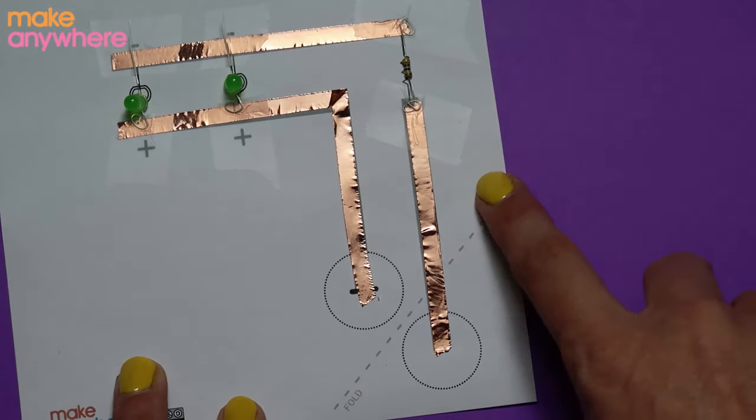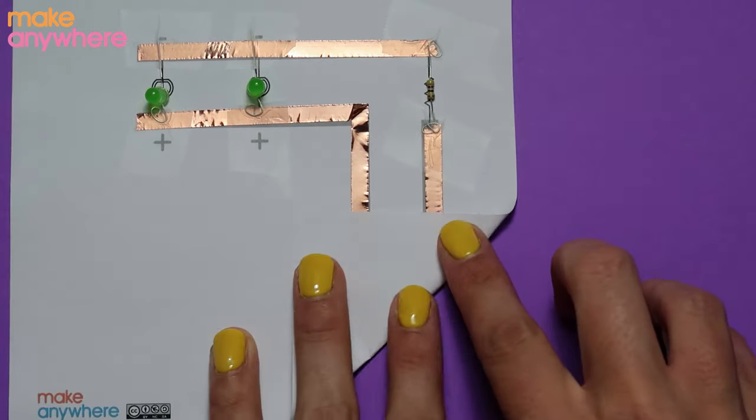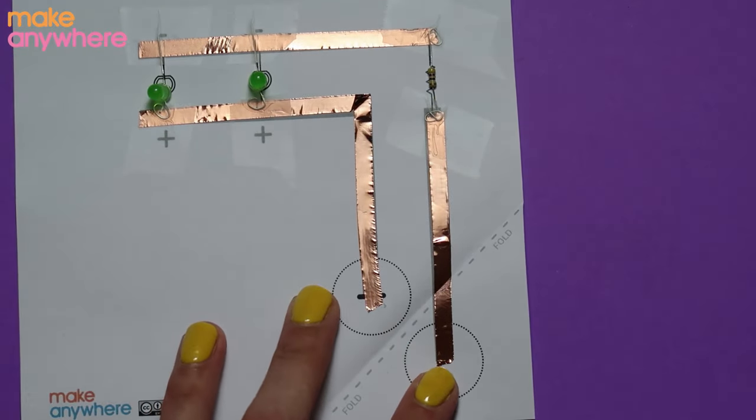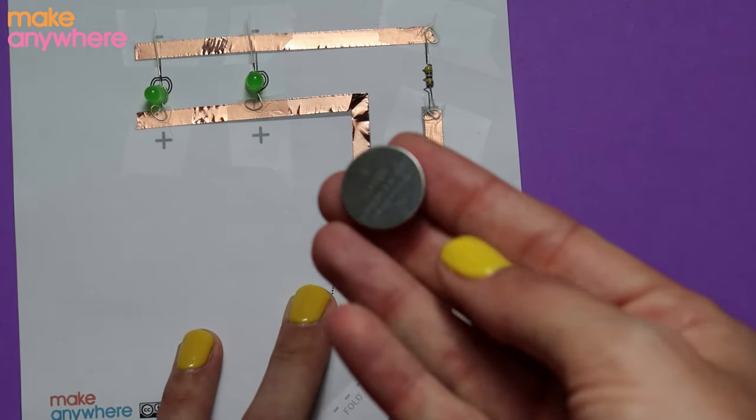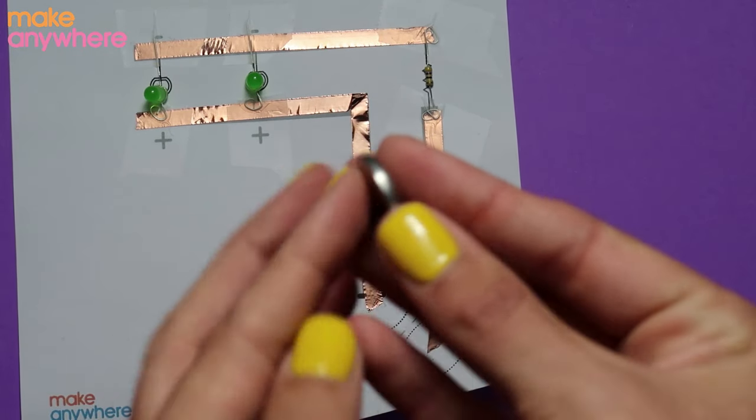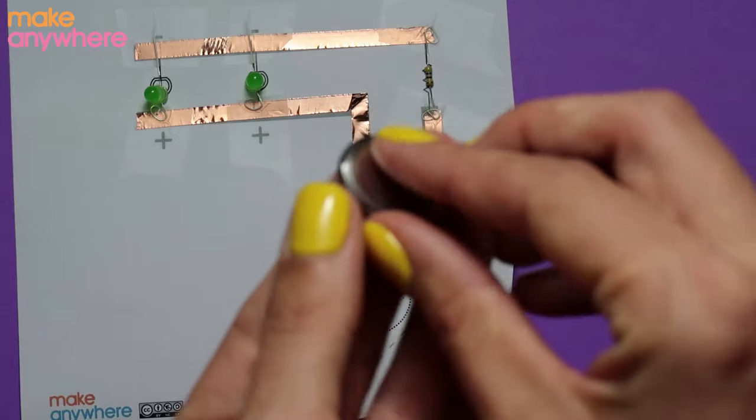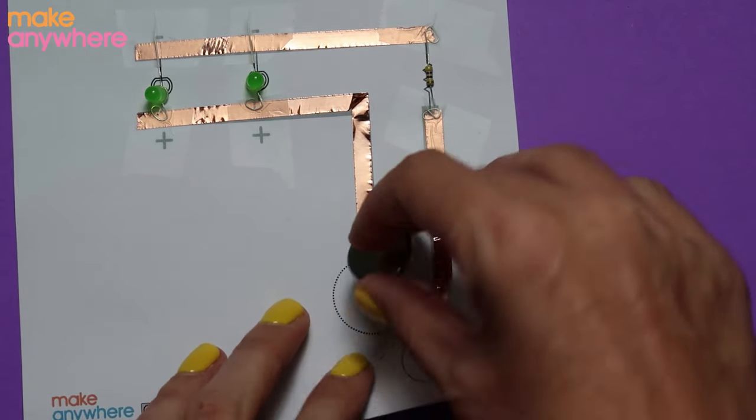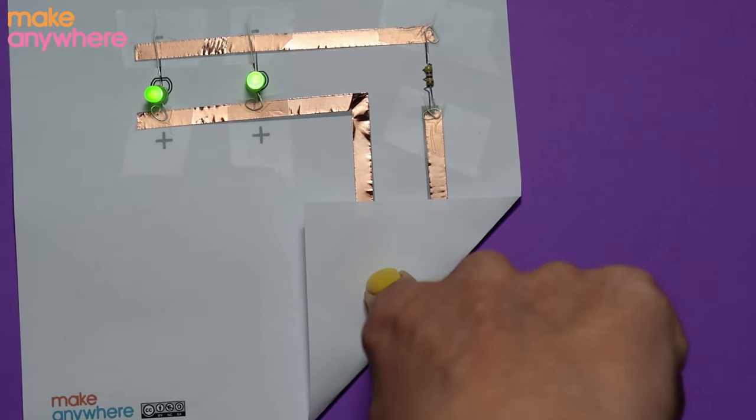Now we're going to fold along here and let's test out our circuit. So take your three volt cell battery, shiny side is the positive and the bumpy side is negative. So we're going to stick the shiny side down on the plus. And there we go.